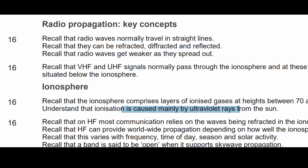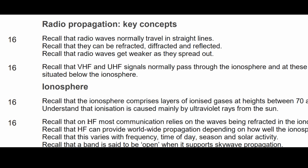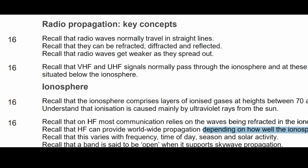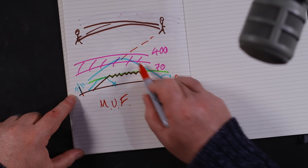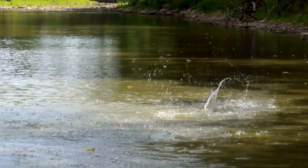The exam will ask about this — recall that the ionosphere comprises layers of ionized gases between 70 and 400 kilometers, mainly caused by ultraviolet rays. On HF, most communication relies on waves being refracted from the ionosphere. Propagation depends on how well the ionosphere is working that day, and the band is said to be open when it supports sky wave. We also call it a skip zone — like skipping a pebble across a pond.